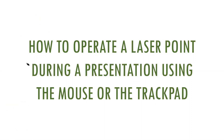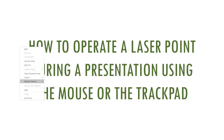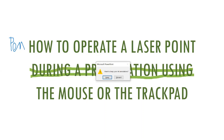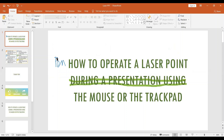Another important feature is that you can either save or discard your ink annotations. To get the option for saving or discarding, you need to click the escape button twice: the first click exits the pointer option mode, and the second click exits the slideshow mode. You will then get a dialog box asking whether to keep the ink annotations or not — keep or discard. If you choose keep, you can see all your ink annotations including the pen and highlighter marks.